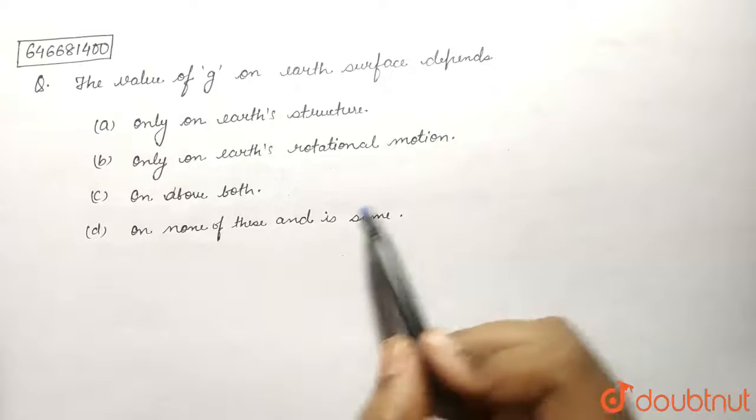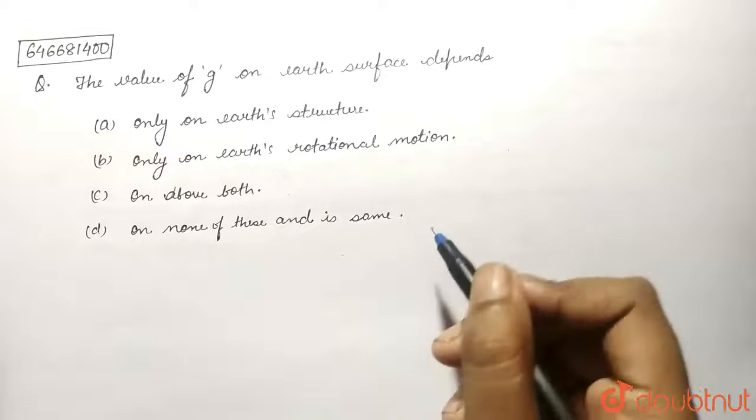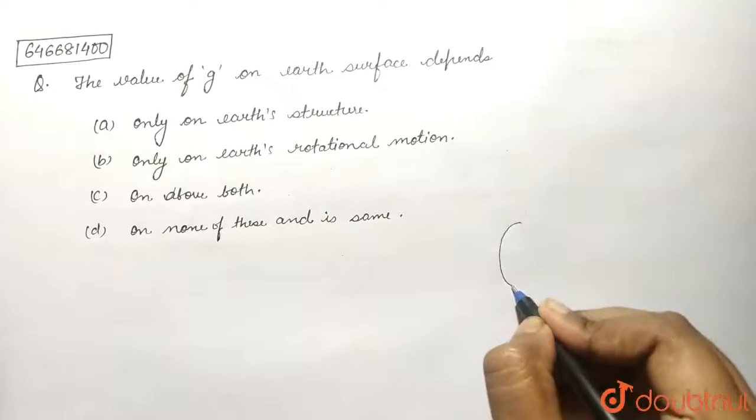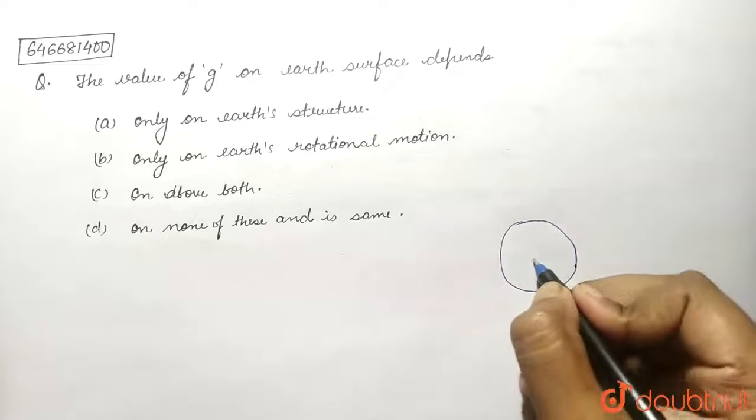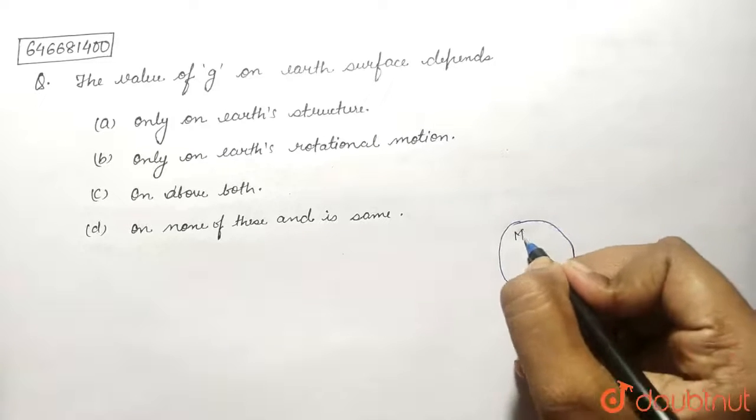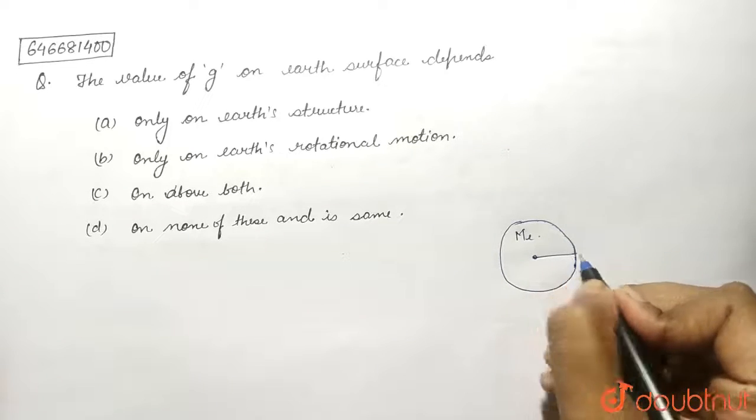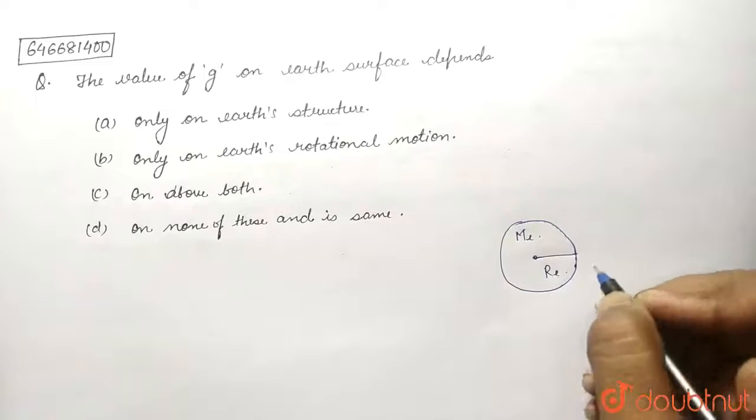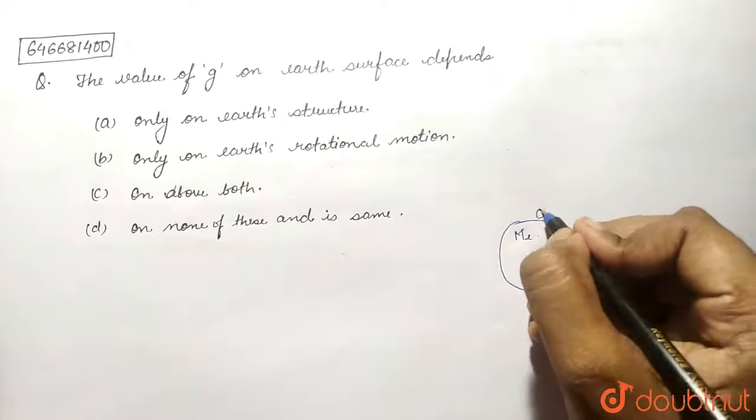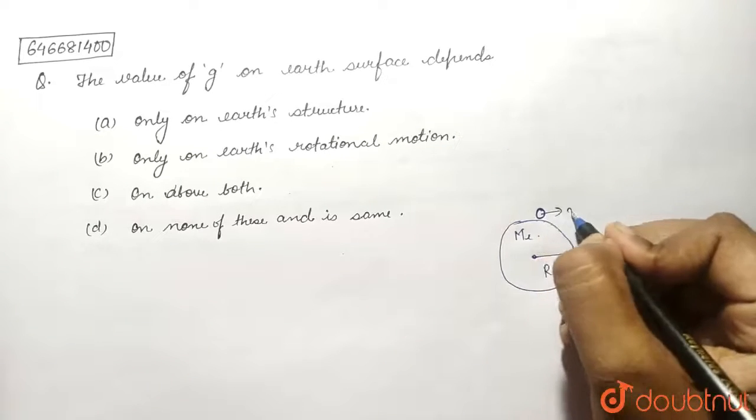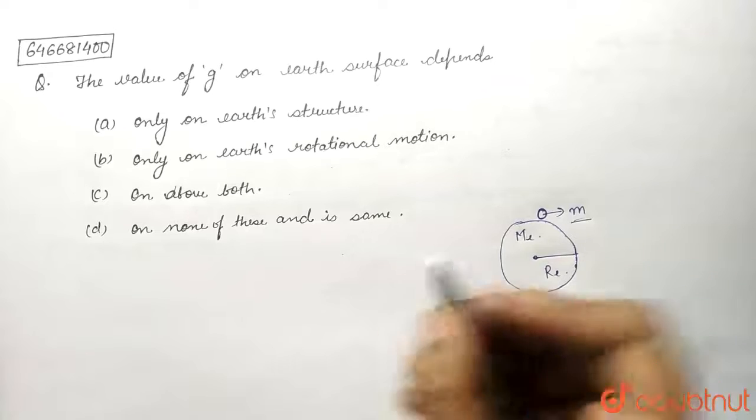Okay, suppose this is the Earth. It has mass M_e (mass of Earth), radius of Earth is r_e. Suppose this is a point mass with mass m (small m).